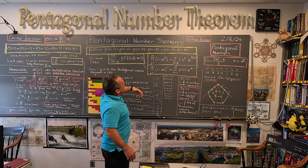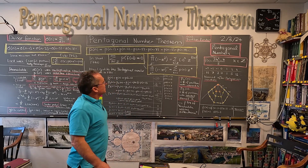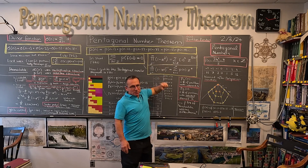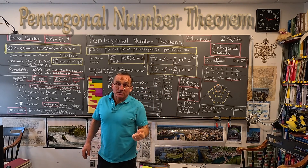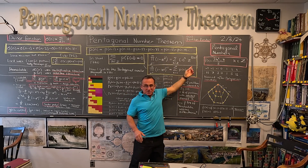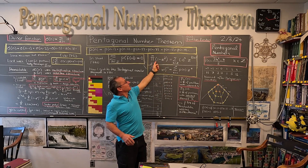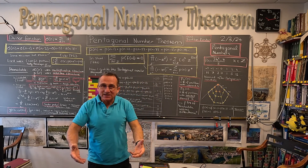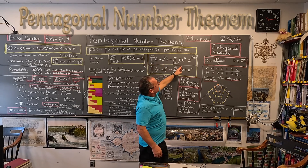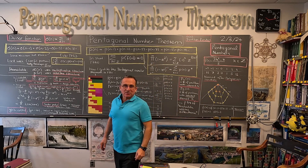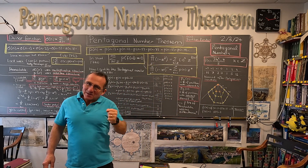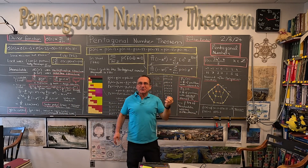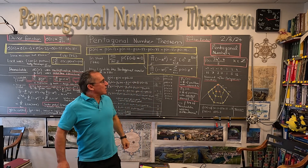And what happens is, if you rewrite this — and Euler already did that — you write this as a product. Euler was a master in calculus. If you take (1−Z)(1−Z²)(1−Z³)(1−Z⁴)... and look at the Taylor series of that, then the coefficients are only plus or minus 1, and they exactly occur on the pentagonal numbers.